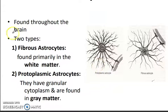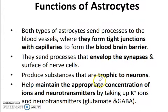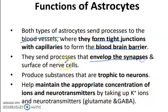Astrocytes are found throughout the brain and are of two types: fibrous and protoplasmic. Fibrous astrocytes are found in white matter and protoplasmic are found in gray matter. Both types of astrocytes send processes to the blood vessels, form tight junctions, and form the blood-brain barrier. They also send processes that envelop the synapses and surface of nerve cells.